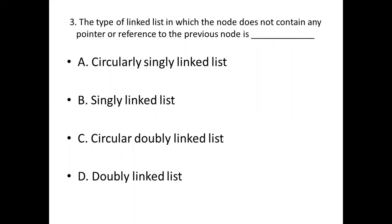Third bit. The type of linked list in which the node does not contain any pointer or reference to the previous node is dash. Option A, circularly single linked list. Option B, single linked list. Option C, circular double linked list. Option D, double linked list. Answer is the same. Option B, single linked list.